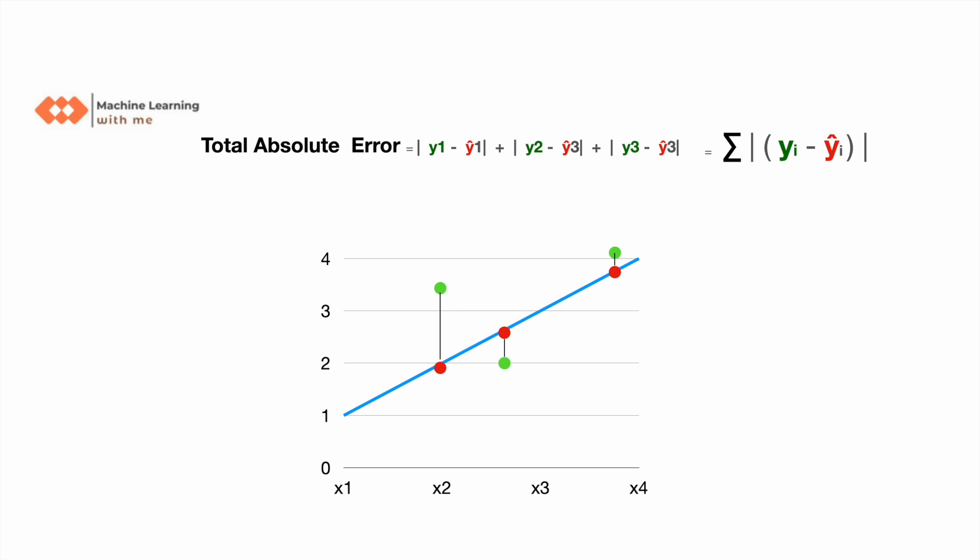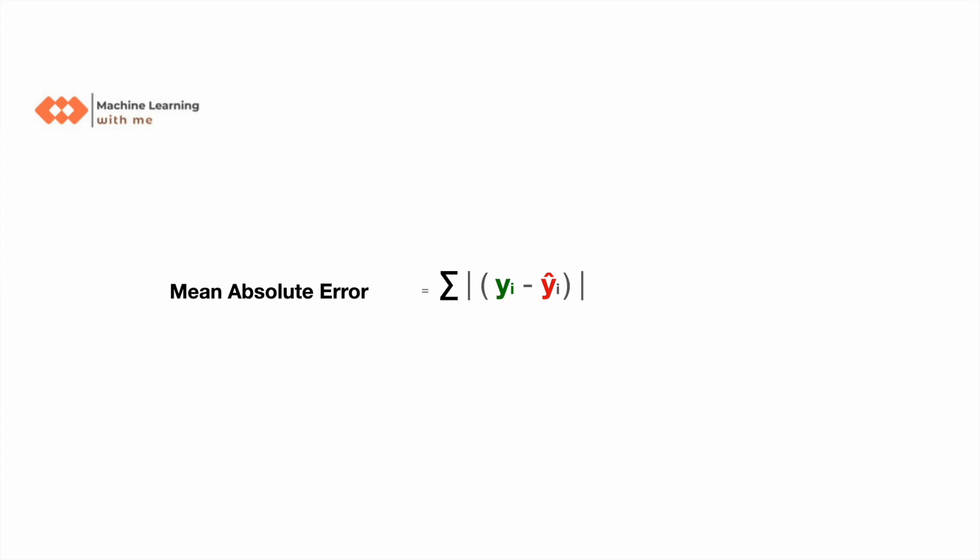The mathematical notation would be summation of |yi - ŷi|, where i is the total number of data points from 0 to N. For instance, here N is 3.